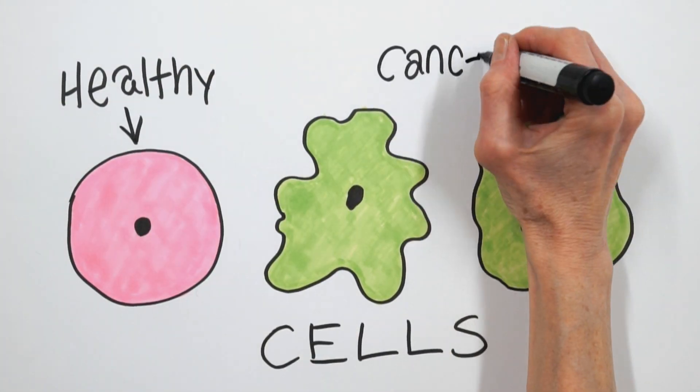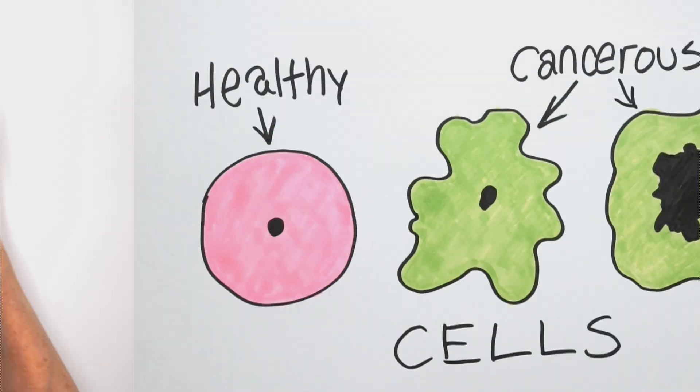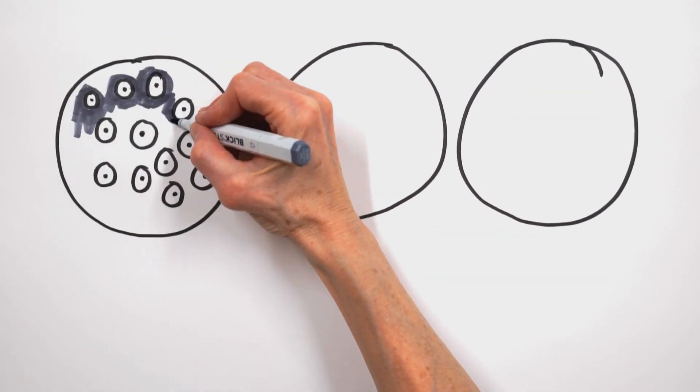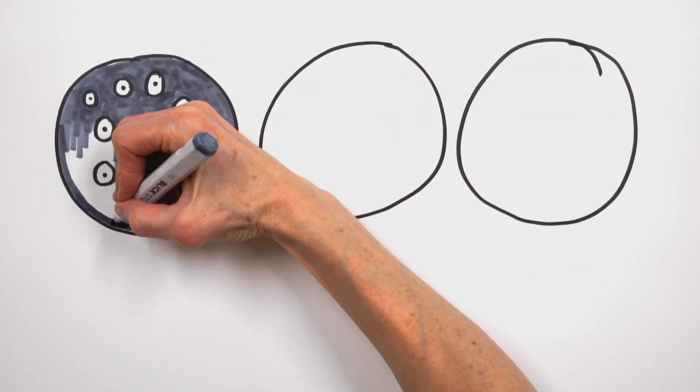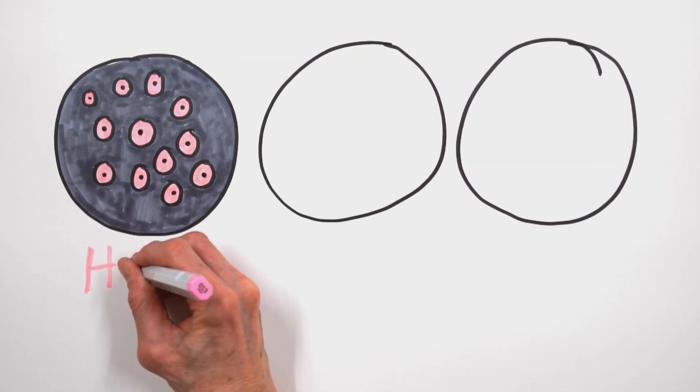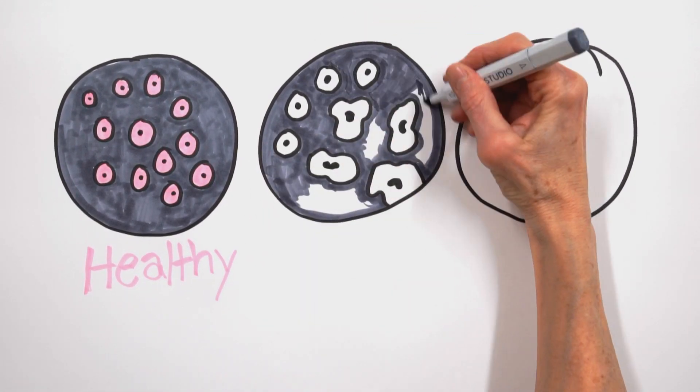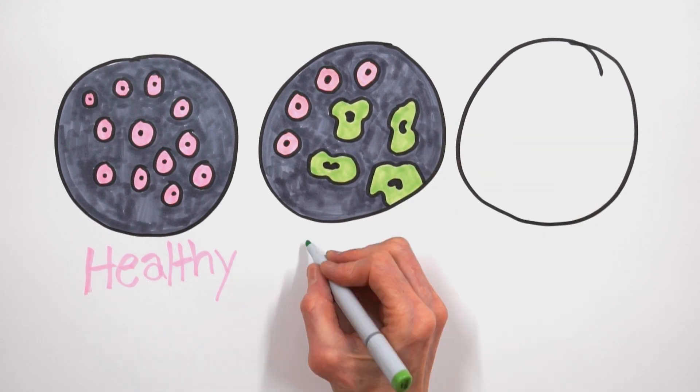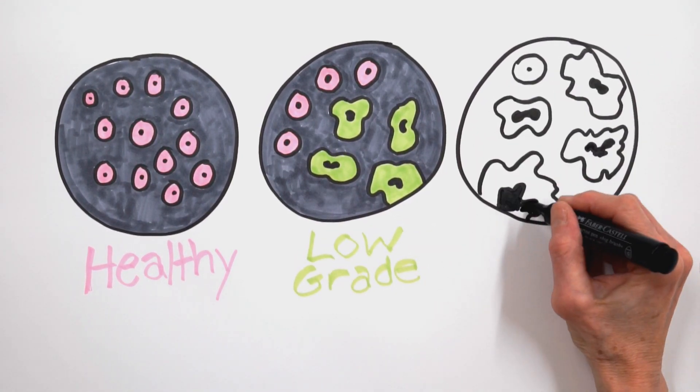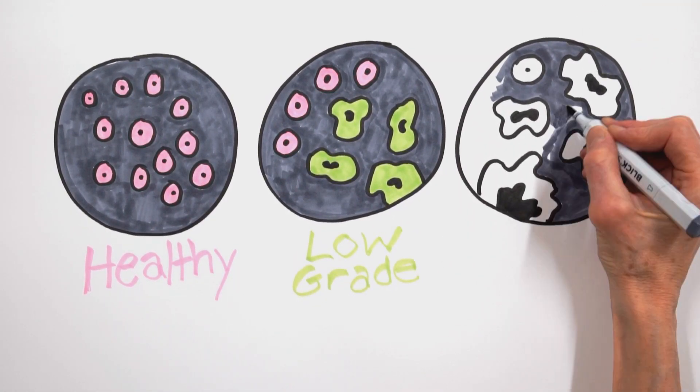After we determine if a biopsy is indeed cancer, we then assign the cancer a grade. The grade can be described several ways and helps to predict how aggressive the cancer may be. We describe the grade by comparing how the tumor cells resemble the normal, healthy tissue. The more changes between normal and cancerous tissue, the higher the grade.